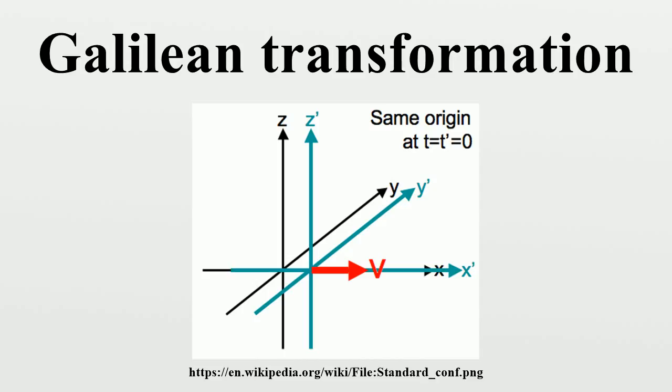The notation below describes the relationship under the Galilean transformation between the coordinates of a single arbitrary event, as measured in two coordinate systems s and s prime, in uniform relative motion in the common x and x prime directions, with their spatial origins coinciding at time t equals t prime equals zero.